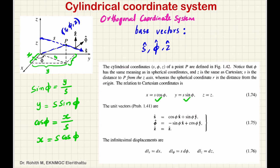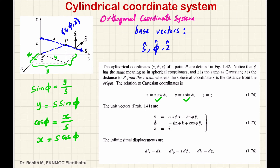Now, we express unit vectors in terms of x-cap, y-cap, and z-cap. S-cap is in the s direction, and it is a combination of cos(phi)·x-cap plus sin(phi)·y-cap. Phi-cap is in the azimuthal angle direction, and it equals minus sin(phi)·x-cap plus cos(phi)·y-cap. Now, if we have S-cap, phi-cap, and z-cap expressed in terms of x-cap, y-cap, z-cap, we can invert it to get x-cap, y-cap, z-cap in terms of S-cap, phi-cap, and z-cap.